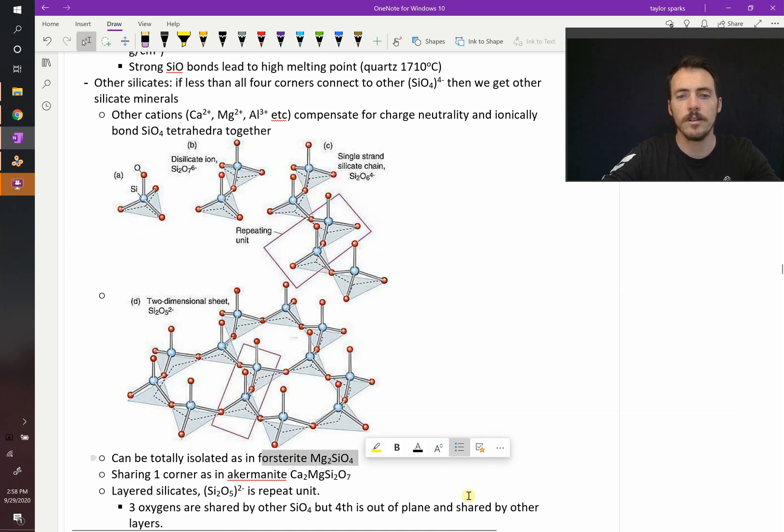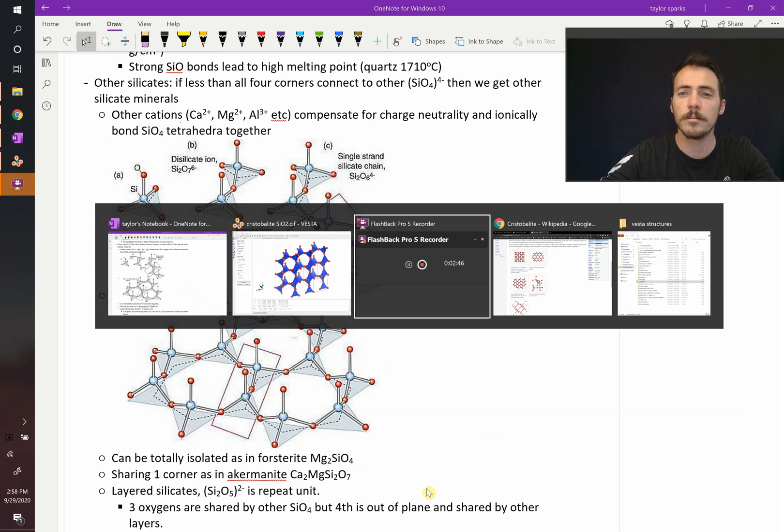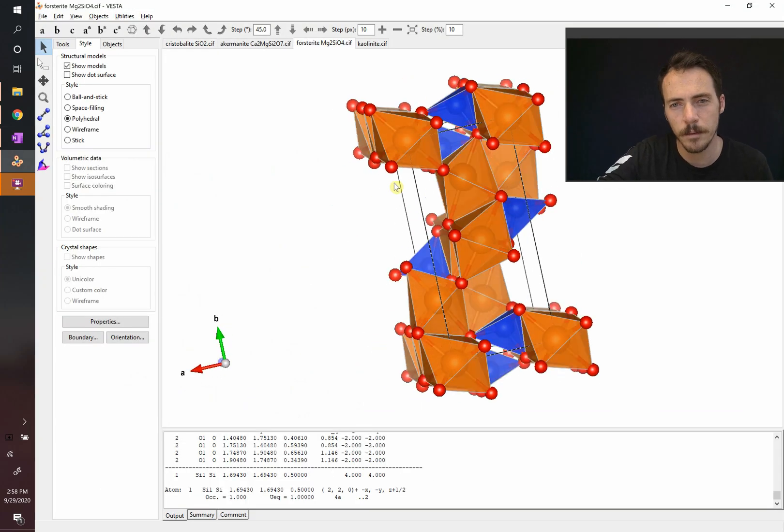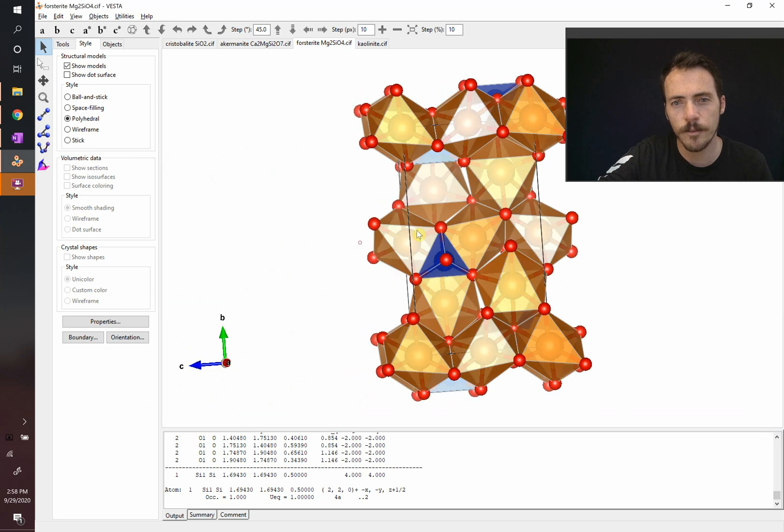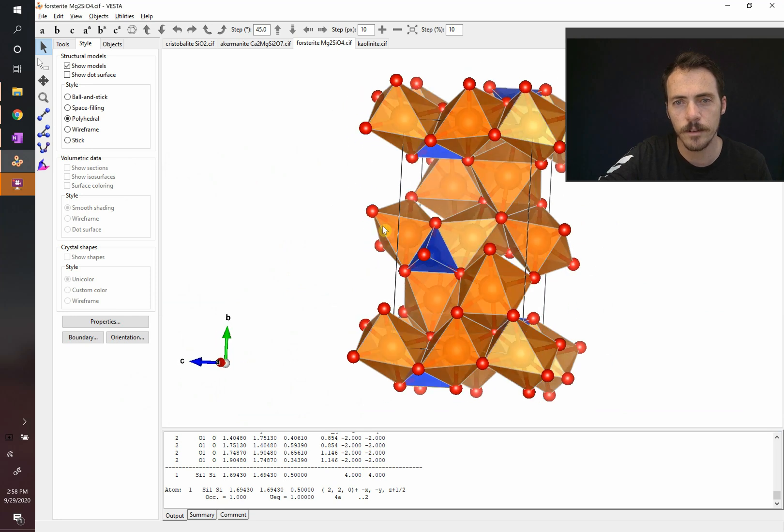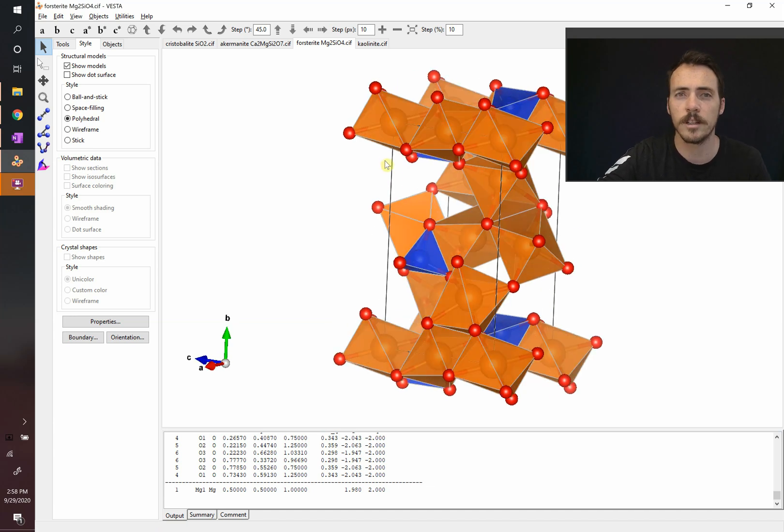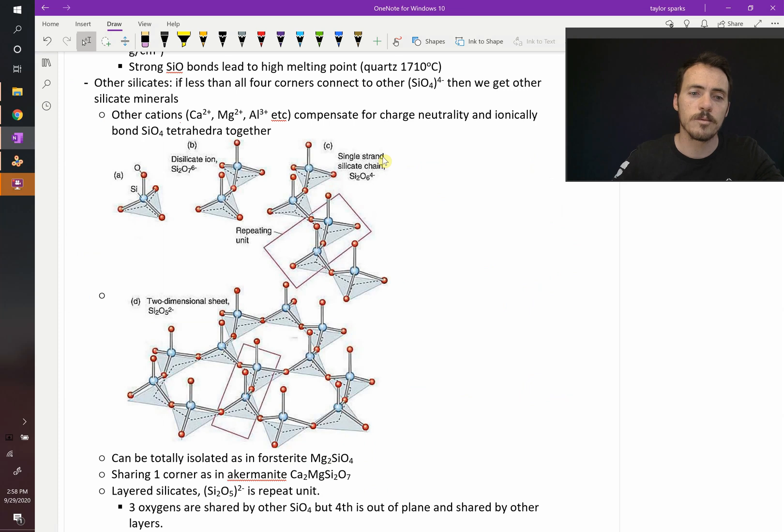Take forsterite, the material Mg2SiO4. That has an example of a tetrahedra that is completely isolated. Right here. See it in blue? It's completely isolated from any others in the crystal structure. It's sharing with other things. In this case, it's the magnesium oxide polyhedra, but the SiO4 are not connected in that one. But there's other ones where they are connected.